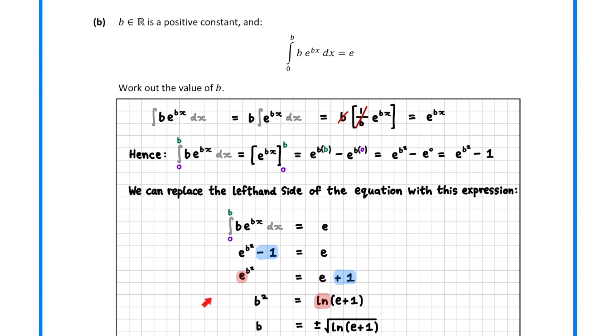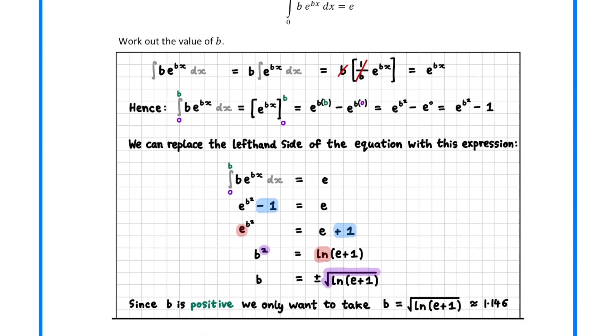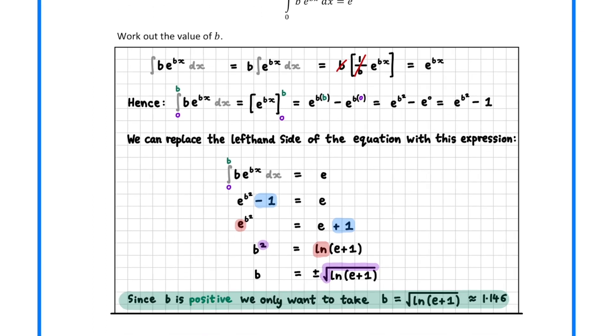Take ln of both sides, and then square root both sides. The question stated that b is positive, so we only want to take the positive solution.